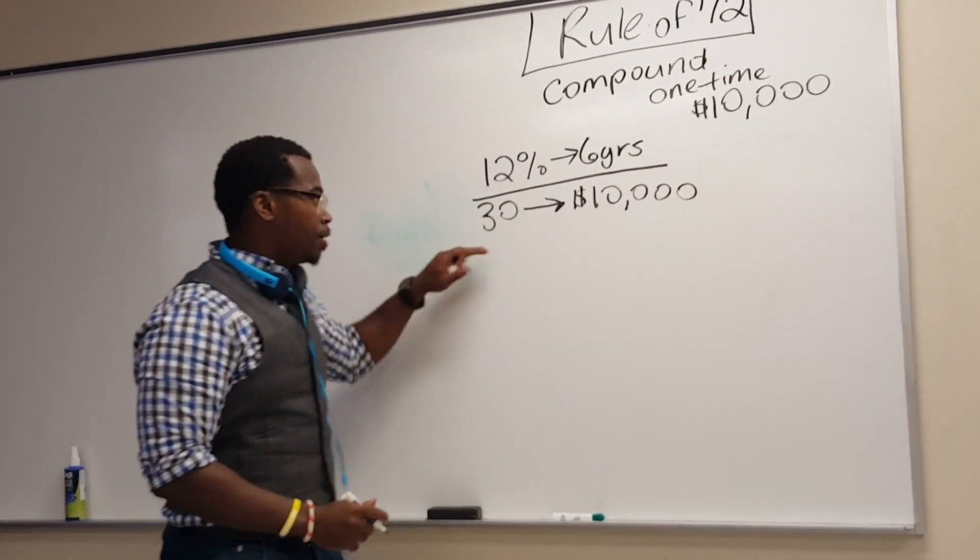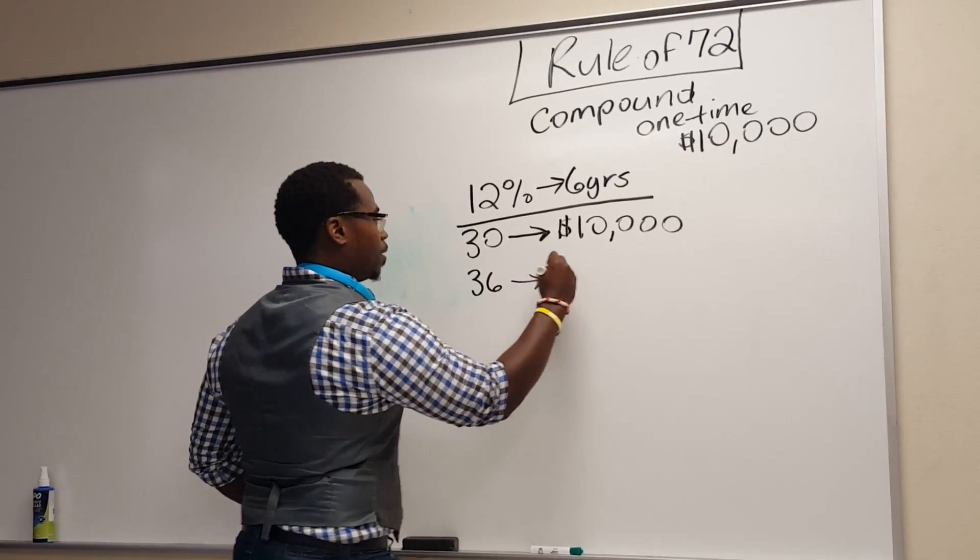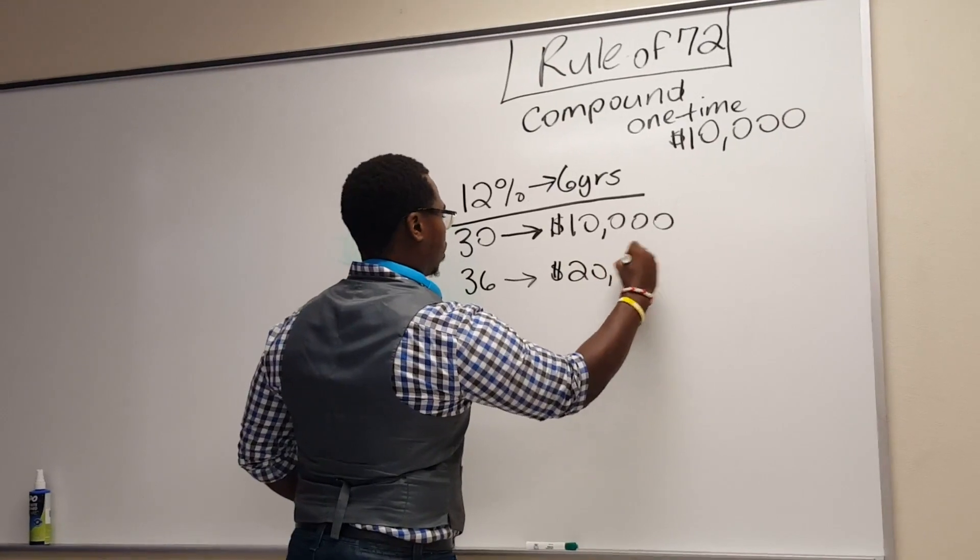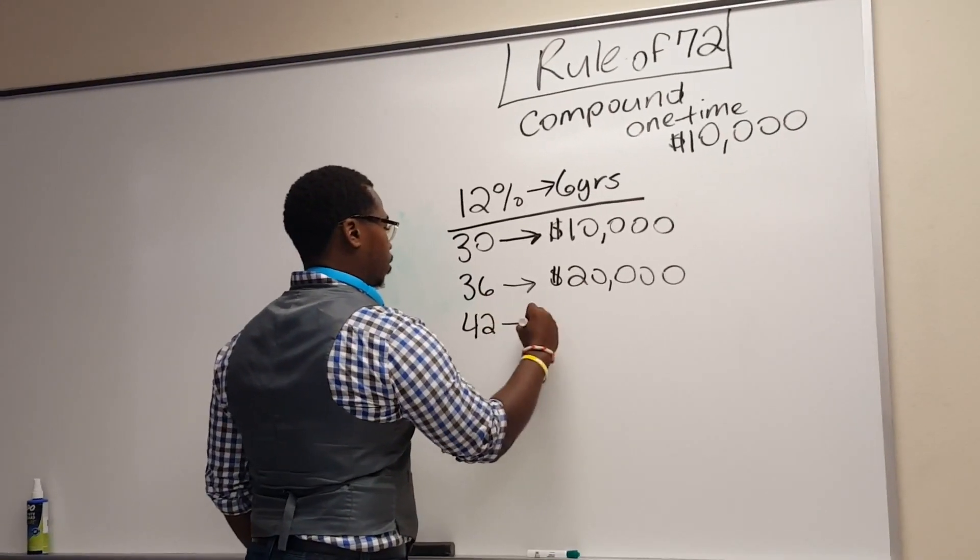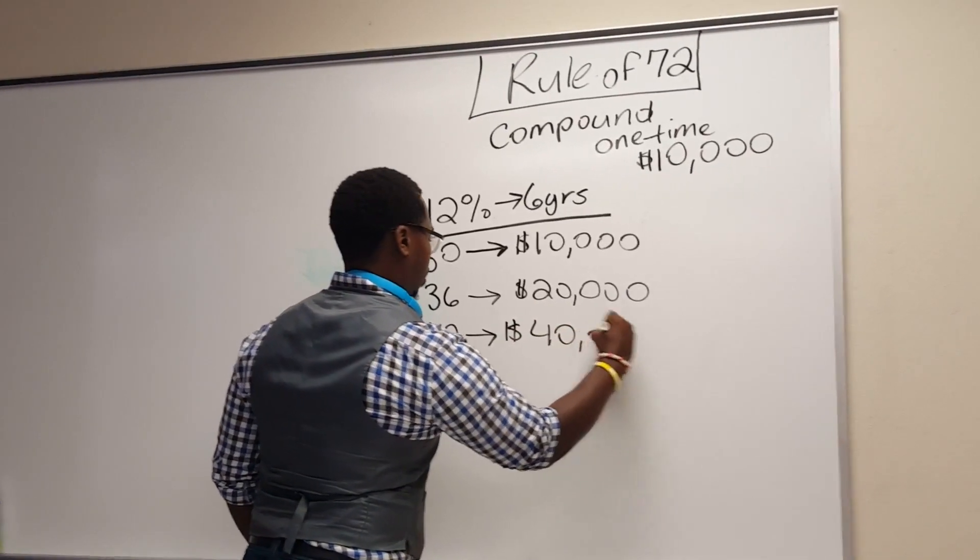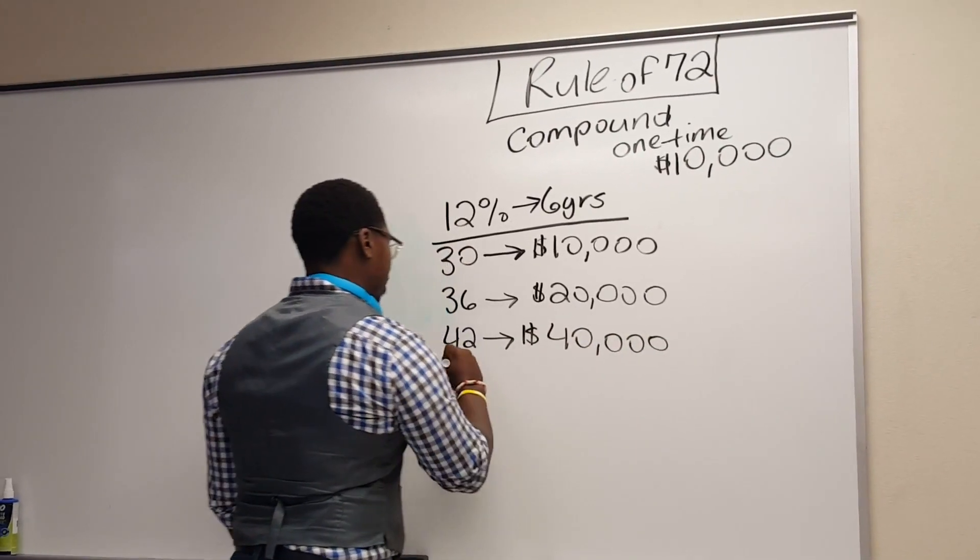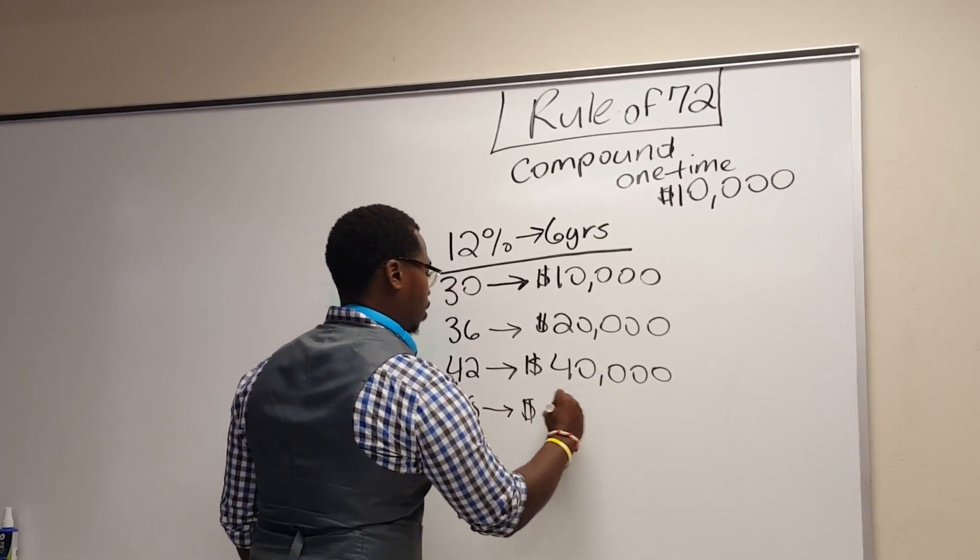So at age 36, where does it go? Y'all follow me at home? $20,000. At age 42, where is it at next? $40,000. And at age 48, it grew to what? $80,000.